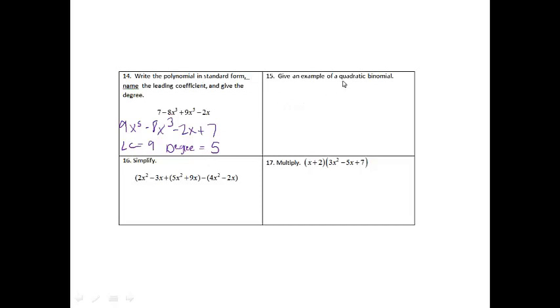Alright, the next one, give an example of a quadratic binomial. Quadratic means degree 2, and binomial means 2 terms. So the highest power has to be 2, and there have to be 2 parts to the problem. So I'm just going to give the example 5x squared plus 7x. You could have all sorts of other examples for that one.